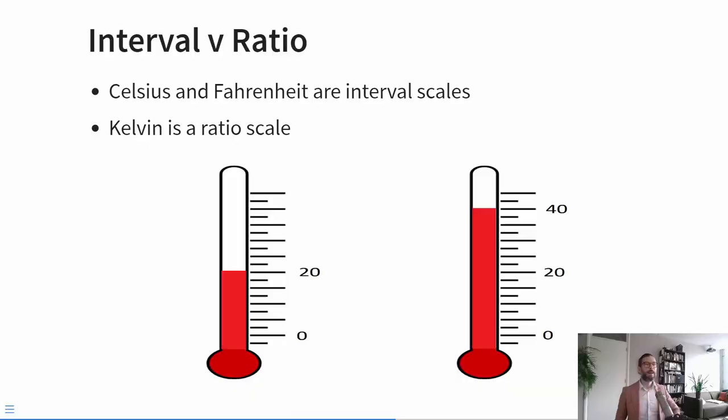The fourth and final measurement level is ratio. Ratio variables are also numeric, but they also have a meaningful zero point. Any variable with a meaningful zero point allows for the calculation of ratios with a meaningful and consistent interpretation. Here's an interesting example: if you think about temperature, there are different scales — Celsius, Fahrenheit, and Kelvin. Celsius and Fahrenheit are interval scales: the distance between 0 and 1 degrees is as big as the distance between 4 and 5 degrees, but the zero point is arbitrary on these scales.